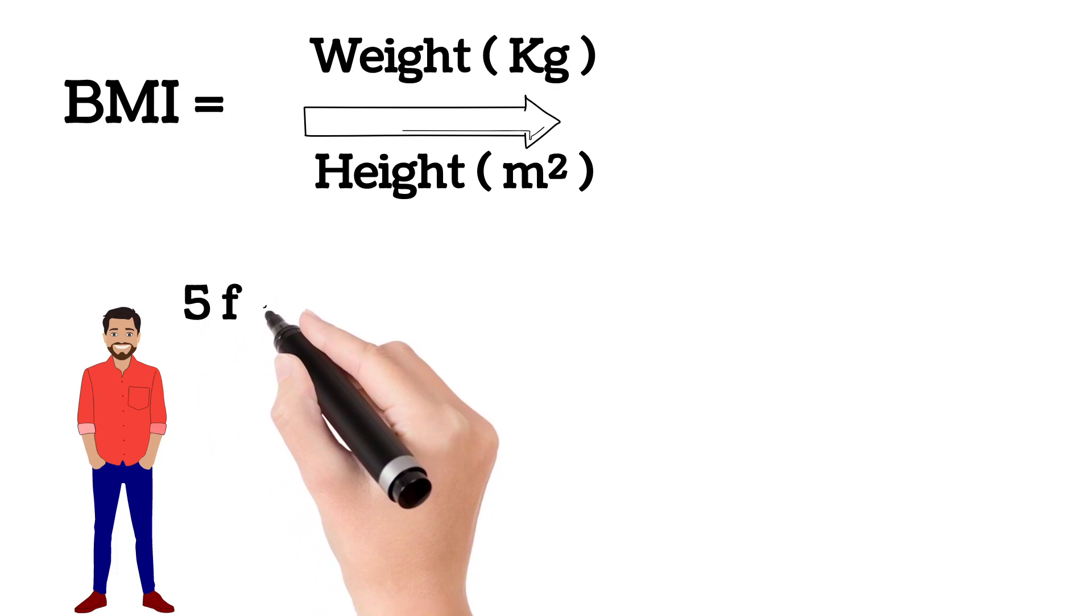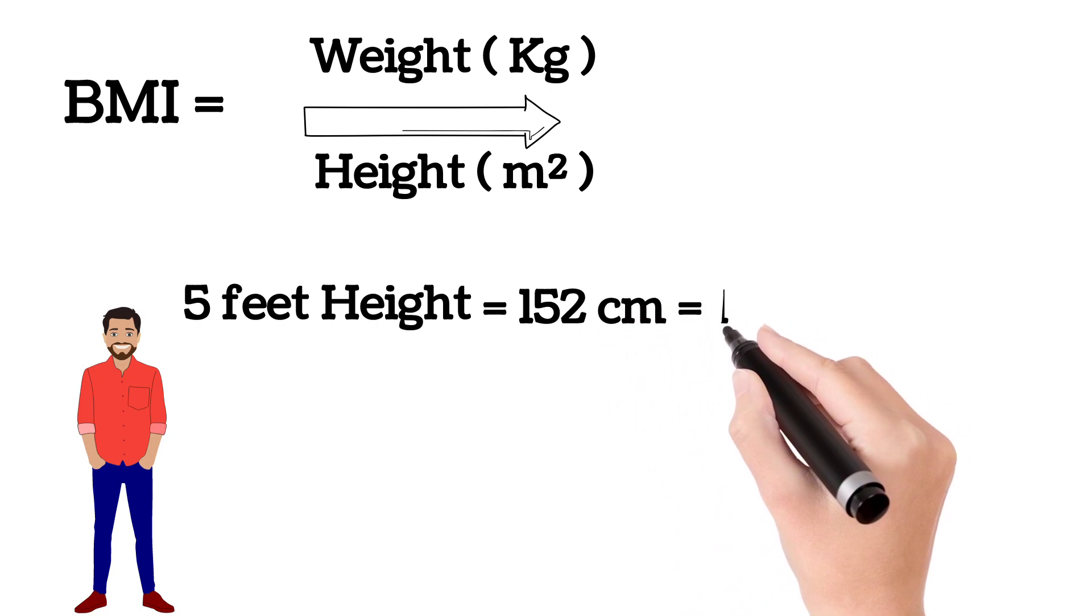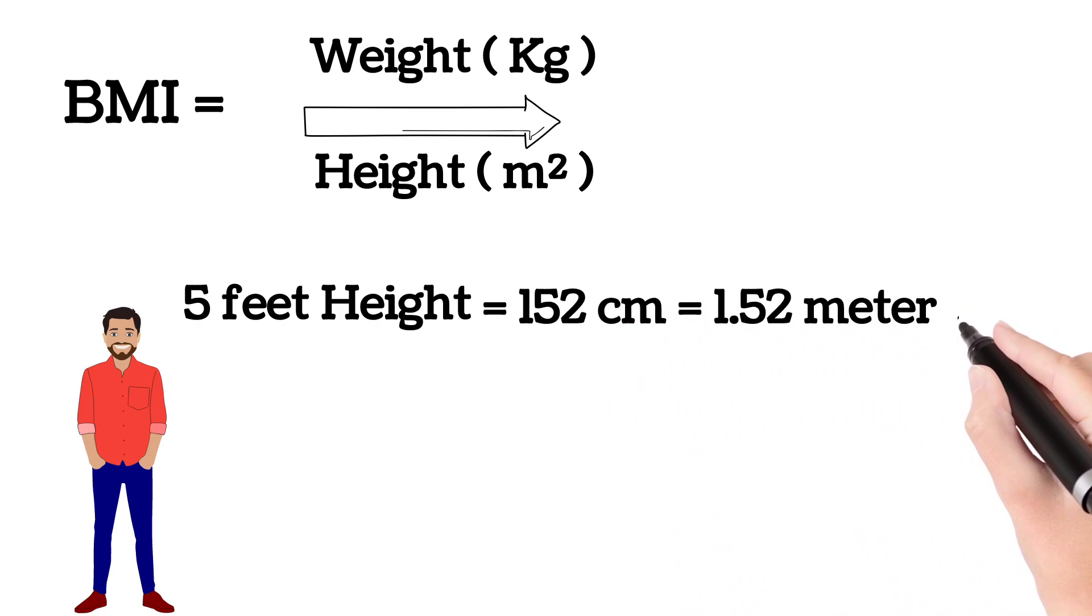For example, if a person is 5 feet height, means 5 feet is equal to 152 centimeters, approximately 1.52 meters. And the person has a weight of 60 kgs.